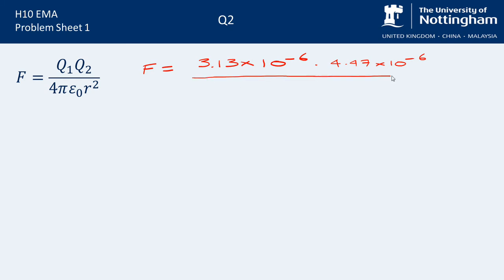And that's the top bit of our equation done. Then that's all over 4 times pi times epsilon naught, which is 8.854 times 10 to the minus 12. Multiplied by the radius squared. So r is the distance between the charges, which was 25.5 centimeters in the question, but we need to convert it to meters, which is 0.255 meters. And remember it's r squared, so we need to square that value.